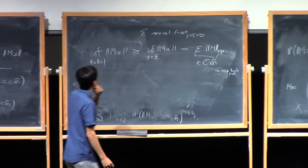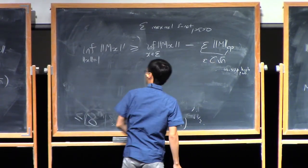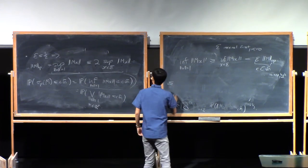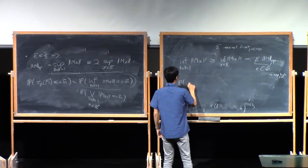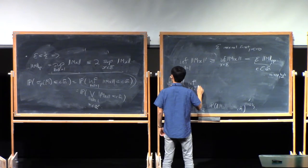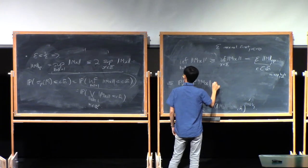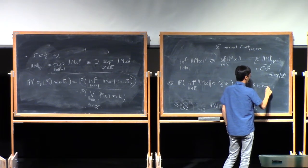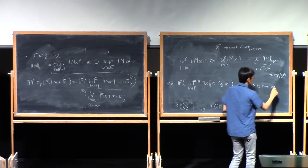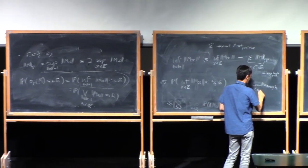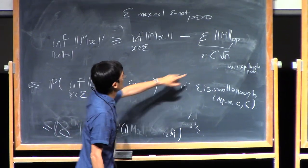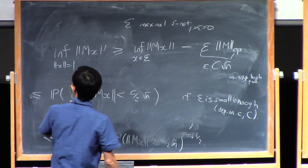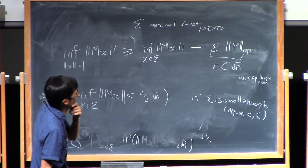This error is tolerable. Because of that, this inf can basically be bounded by the inf over the net, maybe less than c over 2 root n, if you pick epsilon smaller. Previously we chose epsilon equals one half. Now epsilon has to be a bit smaller, depending on little c and big C, because you want this error here to be less than, say, half of c over 2 root n. So you have to pick little c first and then pick epsilon. Let me not keep too careful track of these parameters.